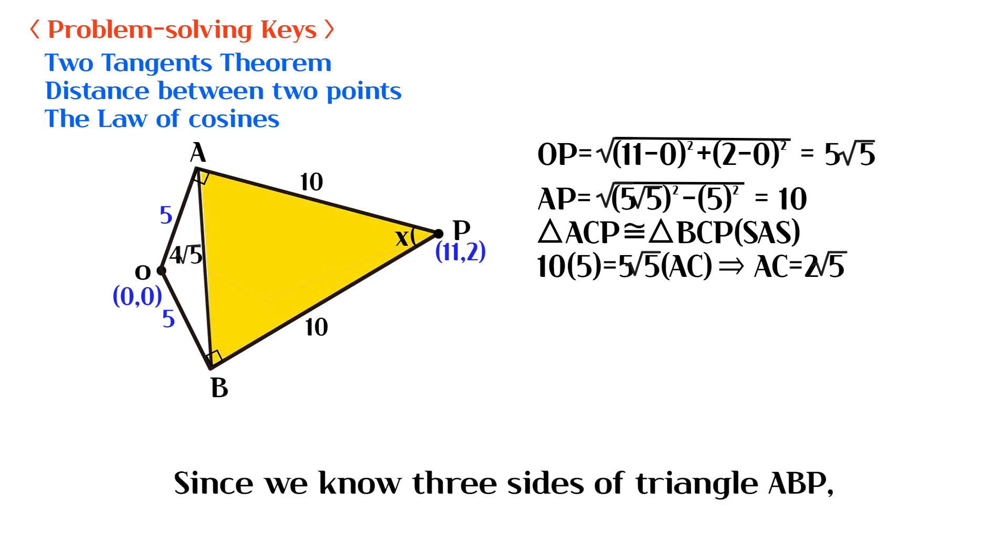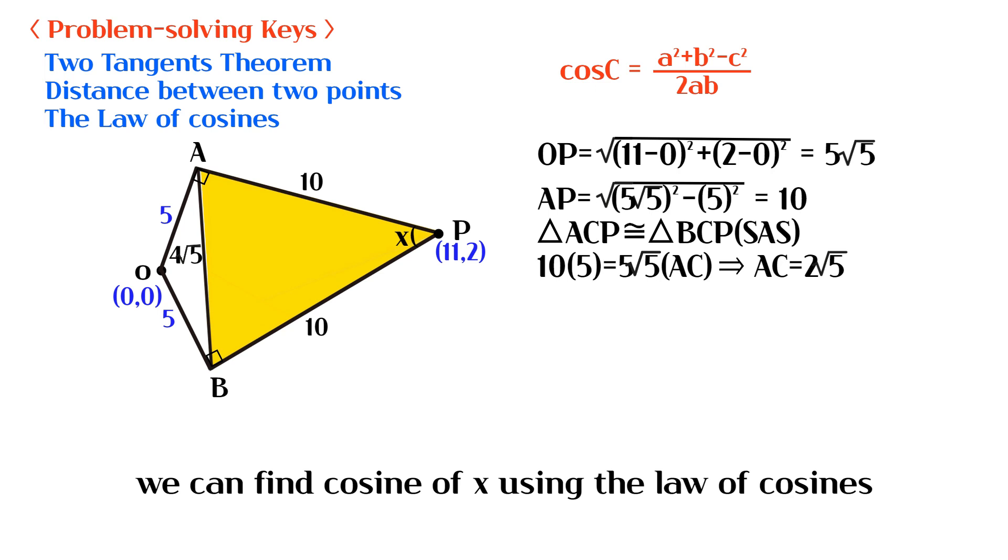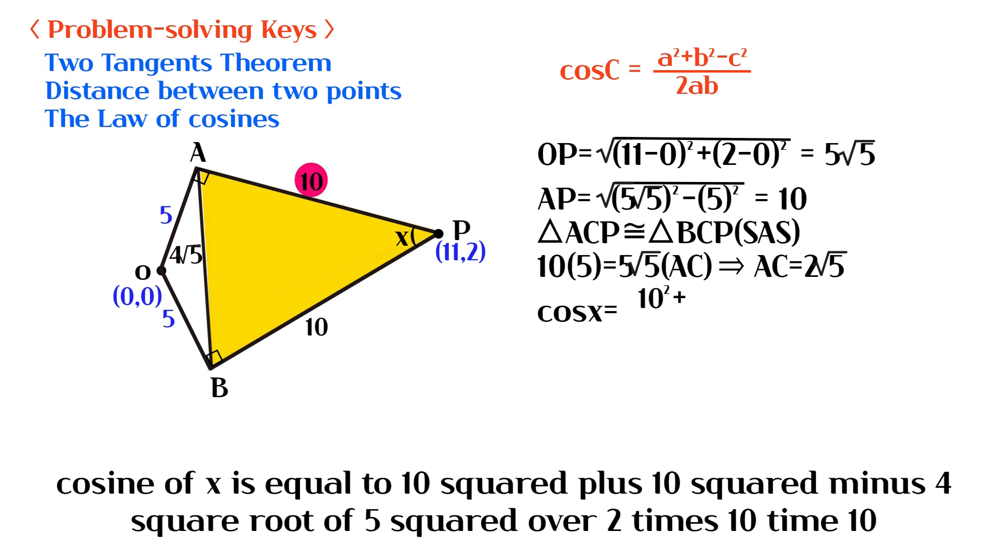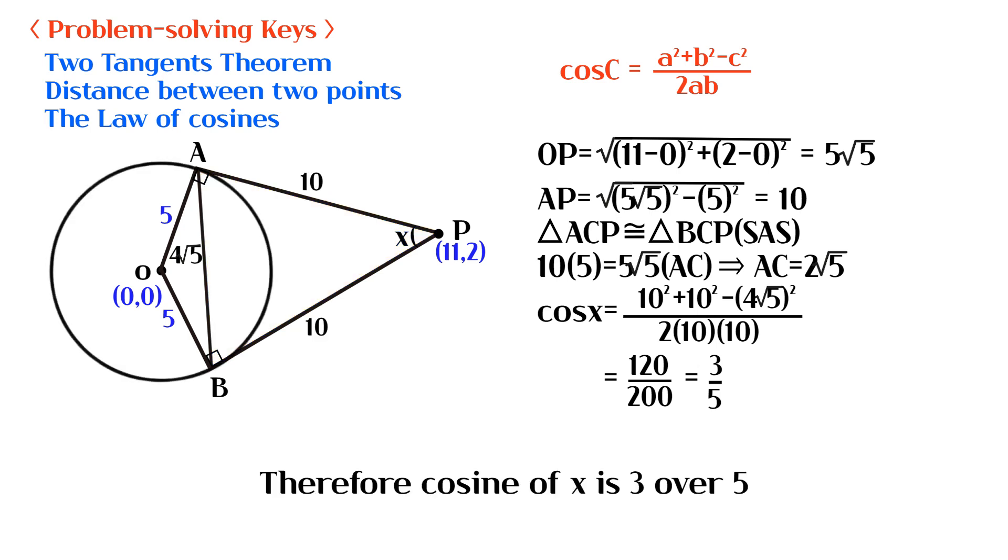Since we know three sides of triangle ABP, we can find cosine of X using the law of cosines. Cosine of X is equal to 10 squared plus 10 squared minus 4 square root of 5 squared, over 2 times 10 times 10. Therefore cosine of X is 3 over 5.